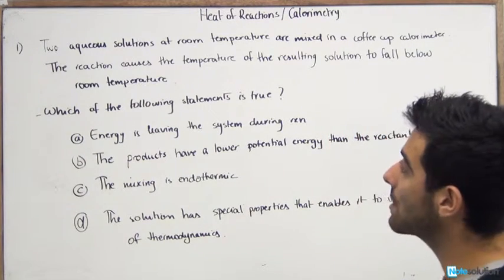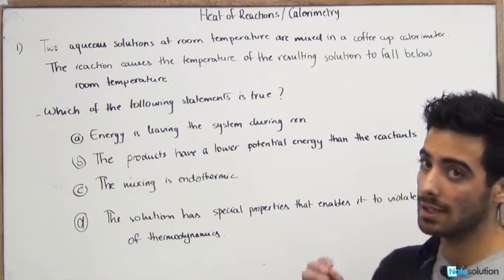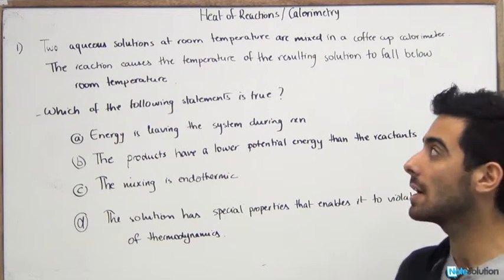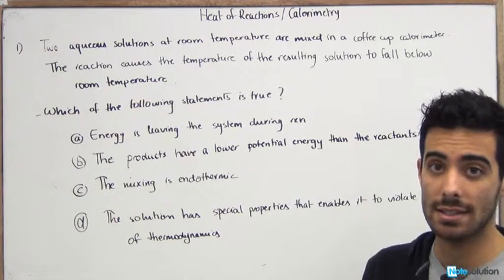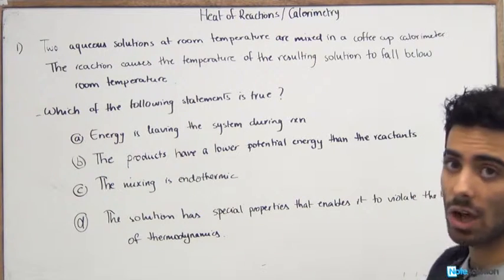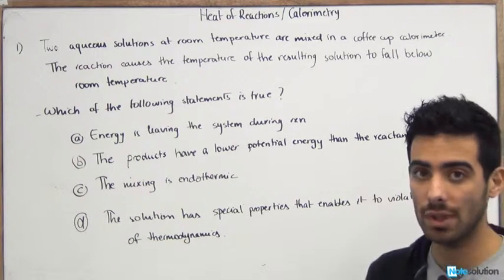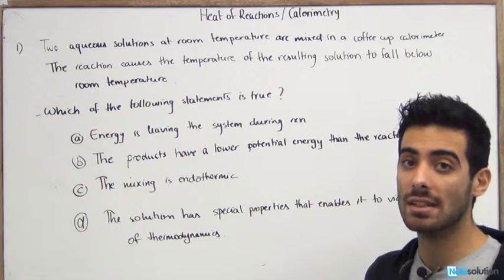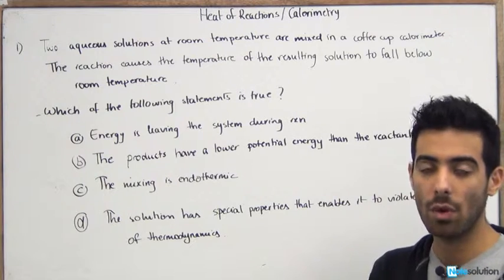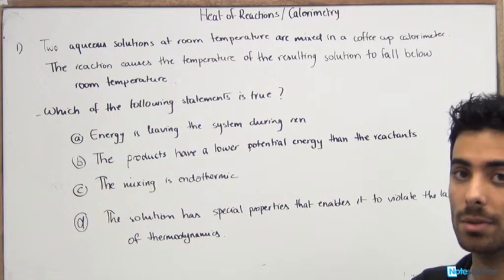So in this question, two aqueous solutions at room temperature are mixed in a coffee cup calorimeter. So you know what a calorimeter is, it's an instrument that is used by scientists or by students in a lab in order to measure the temperature of an isolated system. So in this case we have two aqueous solutions at room temperature mixed in a coffee cup calorimeter. The reaction causes the temperature of the resulting solution to fall below room temperature. So this means that the actual temperature of the system decreased. So the water inside the solution inside the coffee cup calorimeter decreased from room temperature to a level below room temperature.